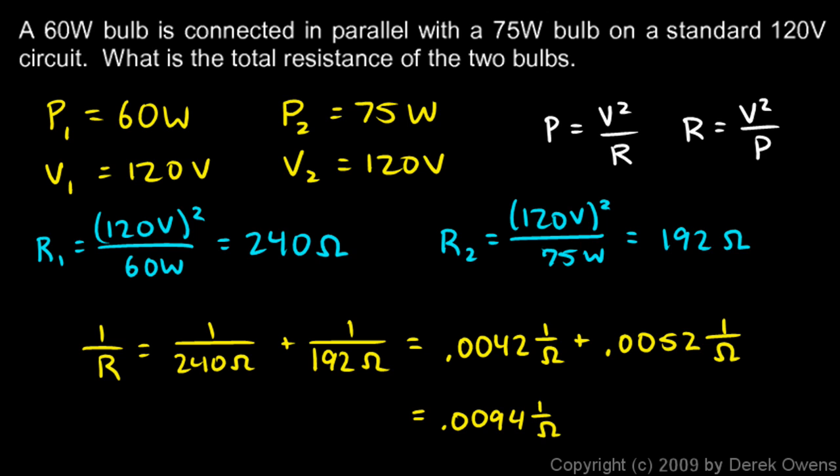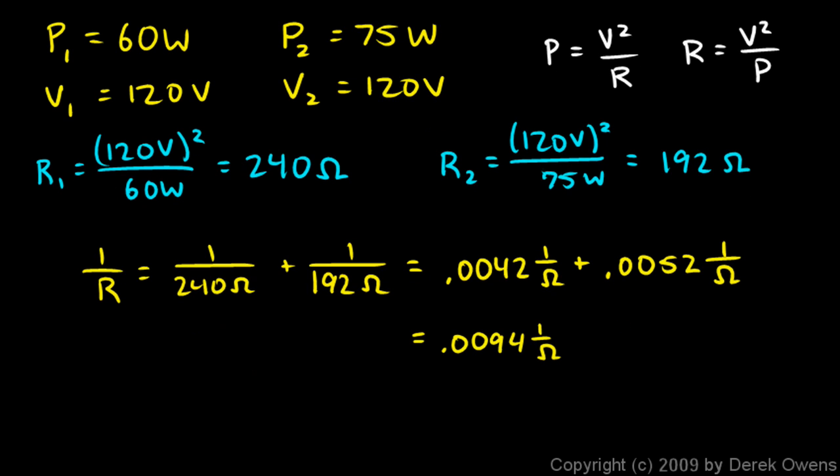1 over ohms. So I just found 1 over R and it's equal to that. So R will just be the reciprocal of that. R is going to be 1 over .0094, 1 over ohms. And I can do that on the calculator, and it comes out to 107 ohms. And that's the answer.